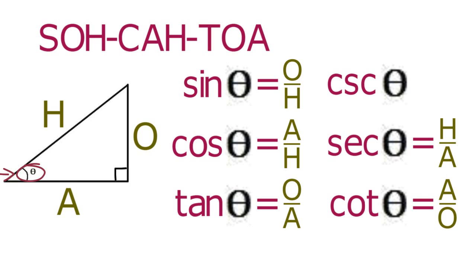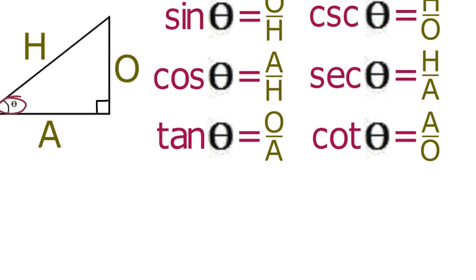And the cosecant of theta equals H over O, which is the reciprocal of the sine of theta. The connection between each trig function and its reciprocal function is made clear in the three reciprocal identities.